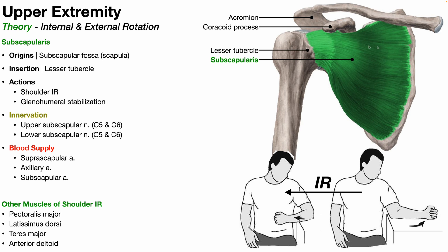That means this green muscle is the subscapularis. It originates in the large basin that occupies pretty much the entire anterior surface of the scapula — the subscapular fossa. The subscapularis is a convergent muscle: it has a very broad origin in the subscapular fossa and the fibers converge to a tendon that inserts on the lesser tubercle of the humerus. This is the only rotator cuff muscle that attaches on the lesser tubercle.